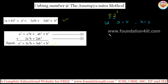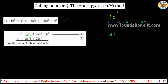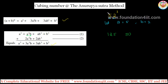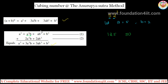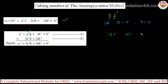Next, compute a²b: first number squared times the second number. 5² = 25, and 25 × 2 = 50. Then compute ab²: first number times second number squared. 2² = 4, and 4 × 5 = 20. Finally, compute b³: 2³ = 8. So our four values are: 125, 50, 20, 8.